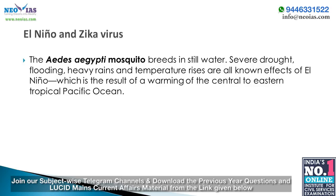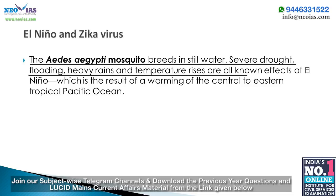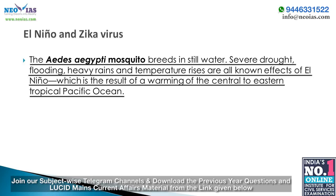Regarding the relationship between El Niño and Zika: the Aedes aegypti mosquito breeds in still water, and severe drought, flooding, heavy rains, and temperature rises are all known effects of El Niño, which results from a warming of the central to eastern tropical Pacific Ocean. An increase in mosquitoes can be expected due to expanding favorable breeding sites. Steps can be taken to prevent and reduce the health effects of El Niño.